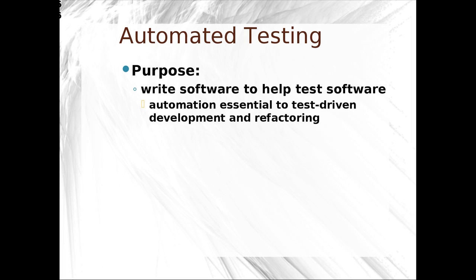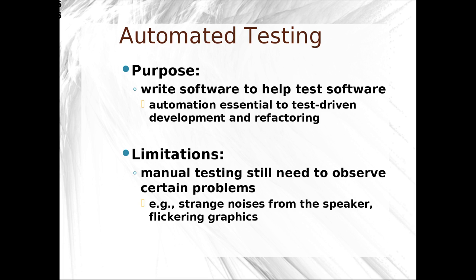We have automated testing. The purpose of automated testing is basically to help us test and write software. Automated testing provides us with feedback about whether our software is working according to our specifications or not. It's limited in the sense that you still need manual testing to observe certain problems, unless you have really great test suites that are domain-dependent. It's hard to test for things like strange noises from speakers or flickering graphics — they might require a lot of tooling to actually observe those issues.